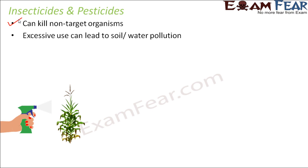Excessive use can lead to soil or water pollution. When we spray insecticide on the plant, it will directly or indirectly reach the soil. These harmful and poisonous chemicals affect organisms present in the soil, affect the composition and texture of the soil — leading to soil pollution. Once poisons reach the soil, they easily reach water as well through soil erosion, causing water pollution.